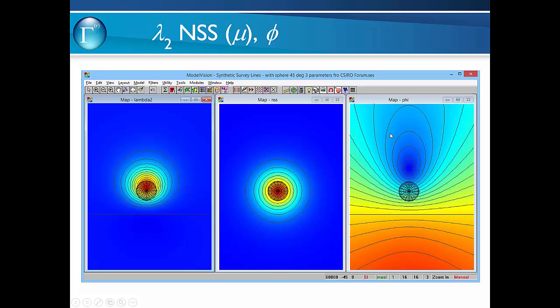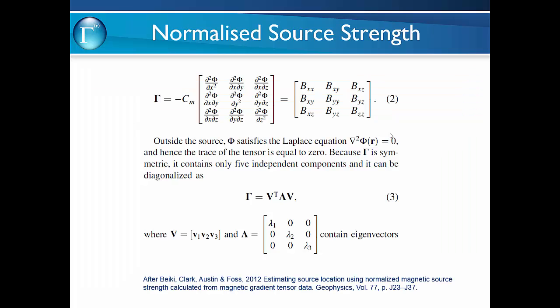Now we're going to explain this in more detail. The normalised source strength is computed from eigenvectors derived from the tensor of the magnetic field. The tensor is shown here.